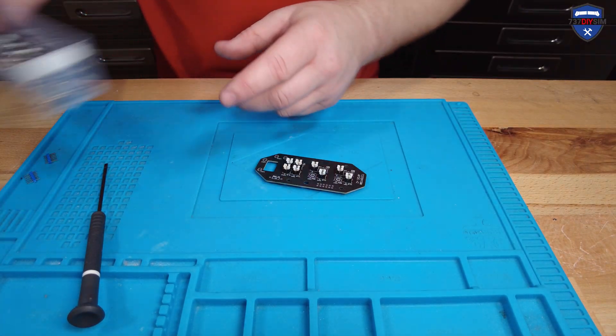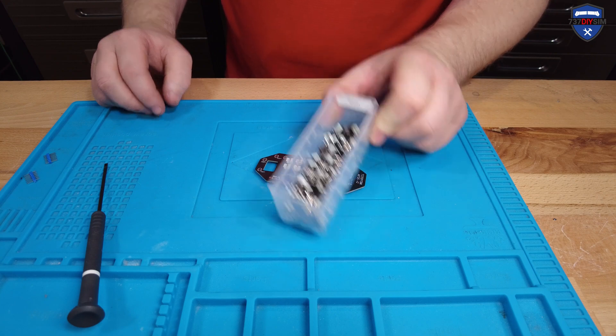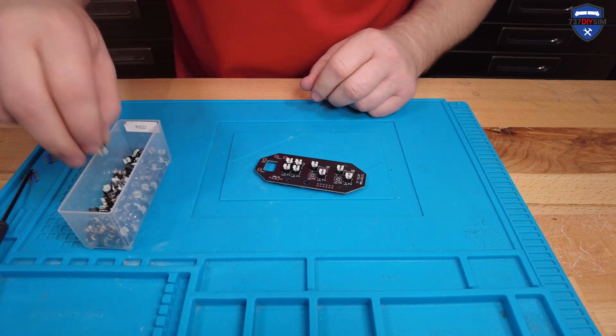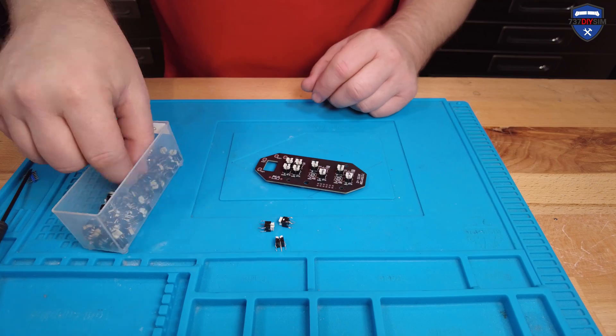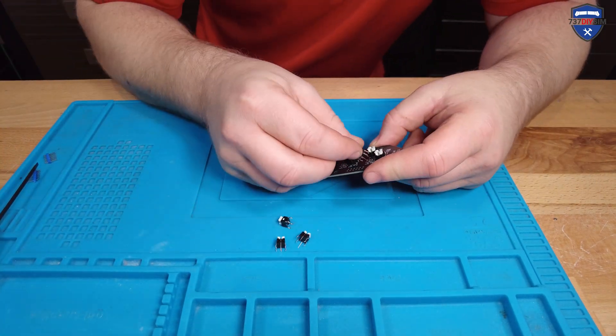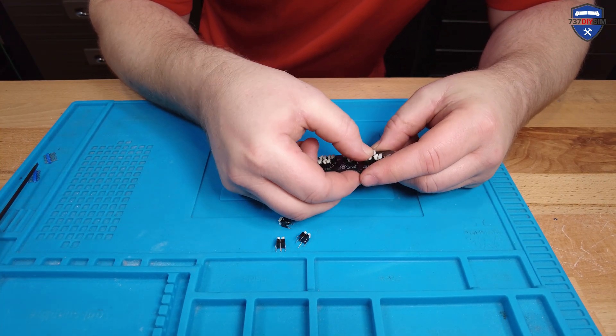Put the yellows away. Bring in the reds. We only need four of these. Looking for the long leg. In they go. Clunk click.